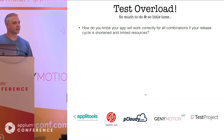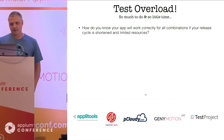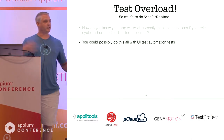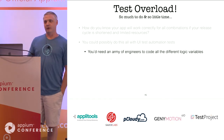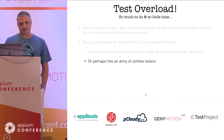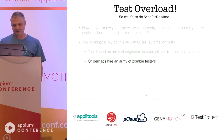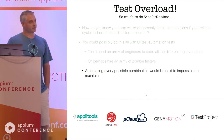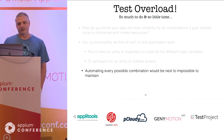Just releasing a new version of an application is a test overload. There's so much to do and so little time, especially factoring in Agile and pushing out releases as fast as possible. You could do this with UI automation — create tests in JUnit, RSpec, whatever your choice — but you would need literally an army of engineers to pull it off. Automating every possible combination would be next to impossible to maintain. Any future updates potentially mean thousands of lines of code, and God forbid there's a major rewrite — then pretty much all your automation is out the door.